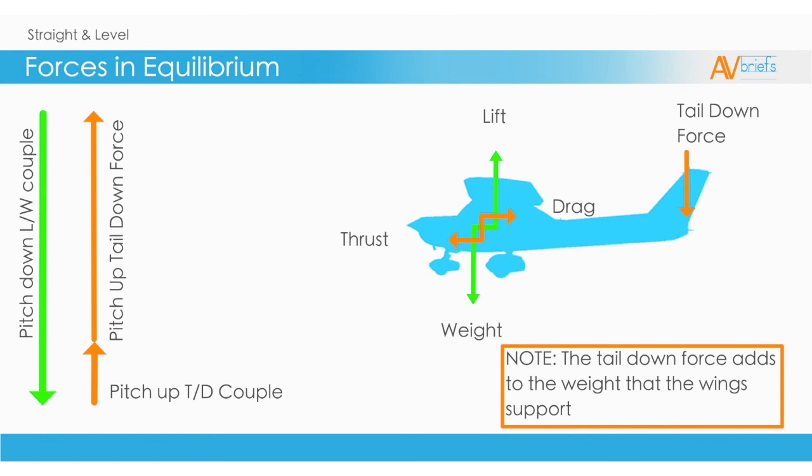Another benefit of this setup is that if you suffer an engine failure, the reduction in thrust will pitch the nose down, which will maintain the airspeed.